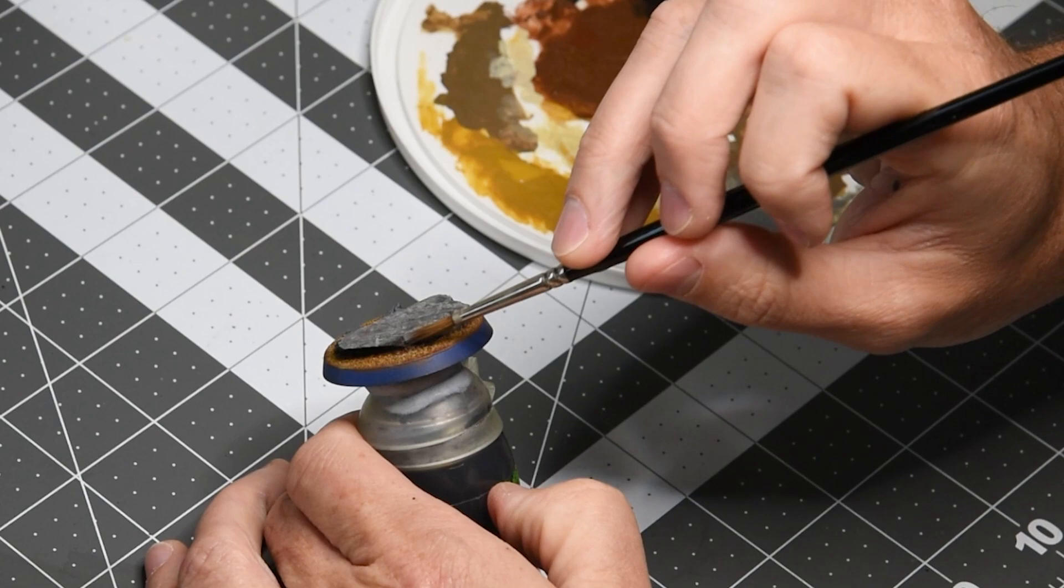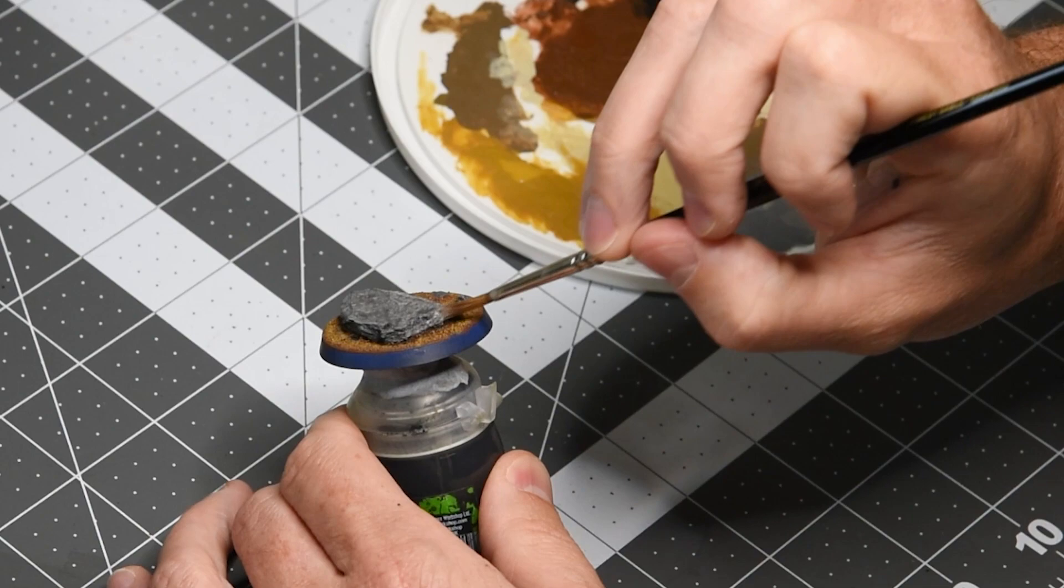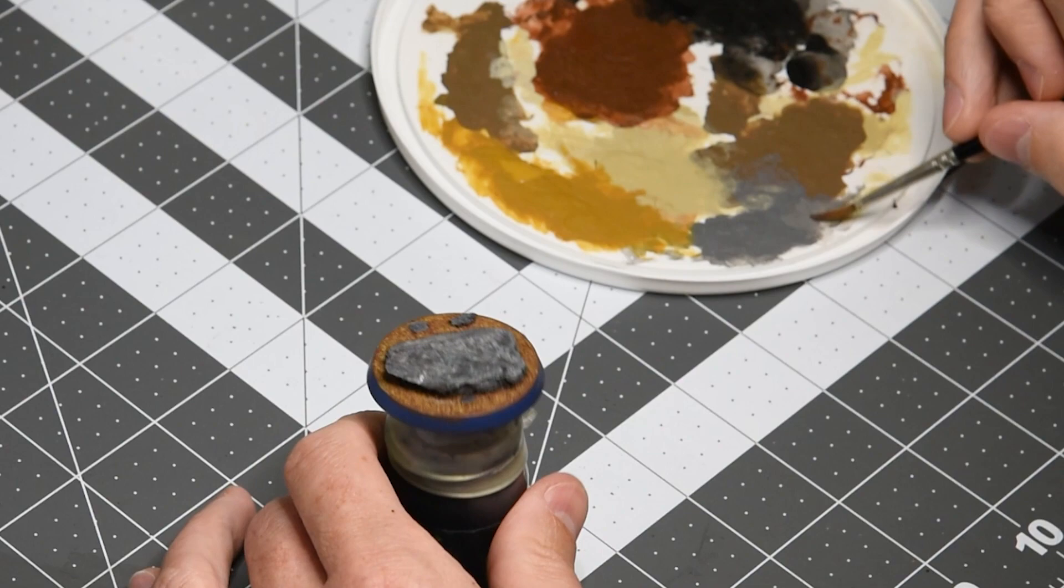We definitely want to hit the underside of the slate rock and get in the little crevices, but once again, we want to make sure not to cover up the previous brown and black that we've done for the shading. This is going to give it a more realistic look than if we just cover it completely and saturate the whole thing with Dawnstone Gray.